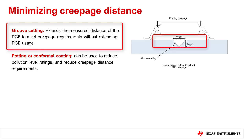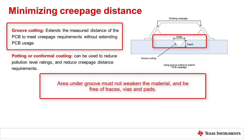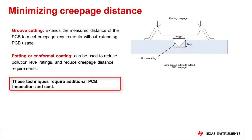For a groove greater than 1 mm wide, the depth requirement is that the existing creepage distance plus the width of the groove and twice the depth of the groove must equal or exceed the required creepage distance. The groove must not weaken the substrate to a point that it fails to meet mechanical test requirements, and therefore all layers under the isolator must be free from traces, vias, and pads in order to maintain the maximum creepage distance. While these methods may reduce required distances, they do add cost and are less reliable, and they also have additional needed inspection steps in PCB manufacturing.